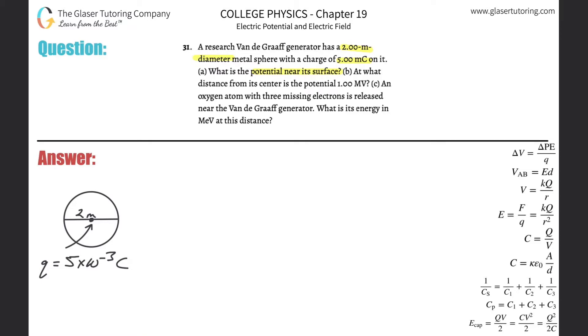All right, so basically what we need to do is assume that this charge, the 5 millicoulombs, is located right at the center of this particular sphere. I've converted that into coulombs already. The diameter of this sphere is 2 meters, so the radius is just half of the diameter, 1 meter.